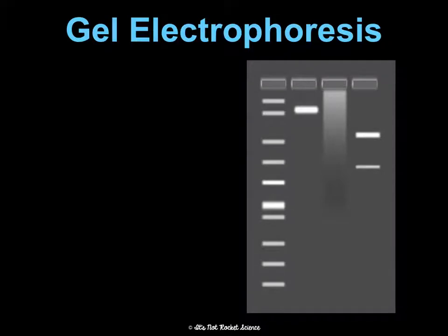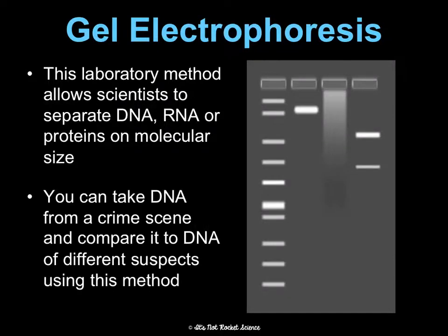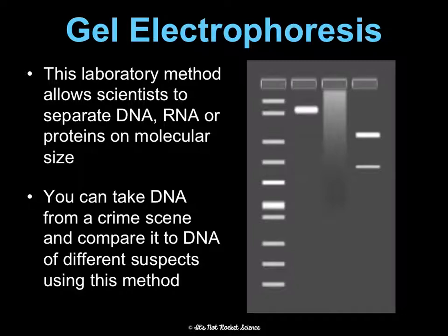Gel electrophoresis is a method that allows scientists to separate DNA, RNA, and proteins based on their size. We can take DNA from a crime scene and compare it to DNA of different suspects using this method to see where the bars match up. This is related to genetic engineering because we're talking about manipulating genes and the locations of genes and how that matters.